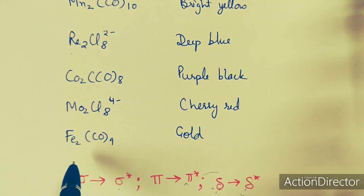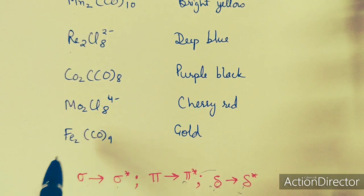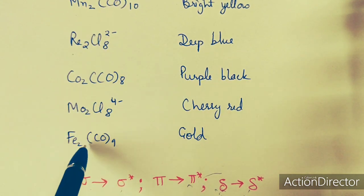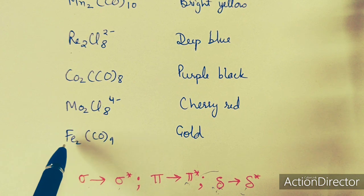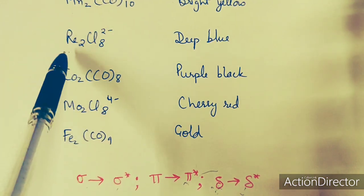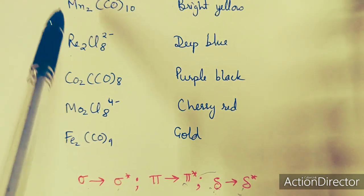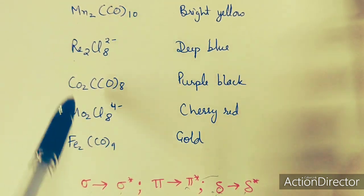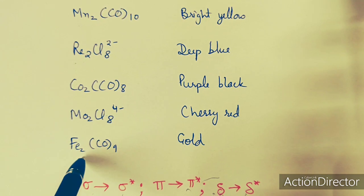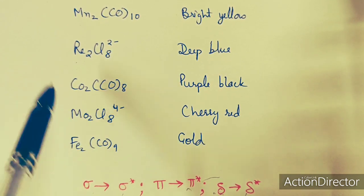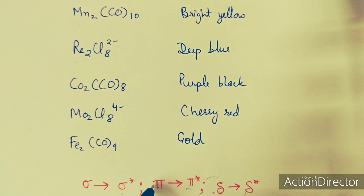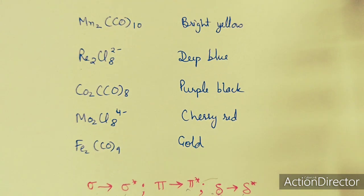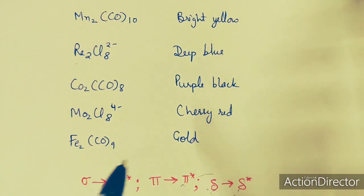This information is important for competitive exams so that you can correctly answer that these compounds are not intervalence compounds. They do not show MMCT type, LMCT type, or MLCT type transitions. Instead, the transitions are between metal to metal orbitals: sigma to sigma* transitions, pi to pi* transitions, or delta to delta* transitions — which cause their dark color.